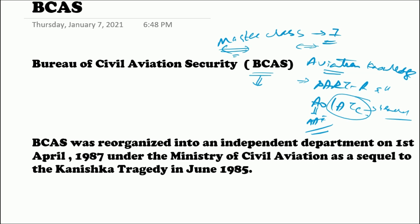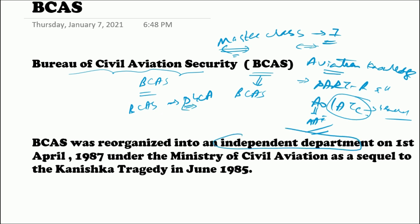BCAS stands for Bureau of Civil Aviation Security. This is a very important organization in India related to aviation. BCAS was initially a part of the DGCA, but after one incident happened, it became an independent department on 1st April 1987 — this is a key term to remember. It works under the Ministry of Civil Aviation.